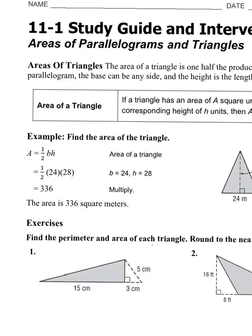Now we'll talk about areas of triangles. There are two ways to find the area: area equals one-half base times height, or area equals base times height divided by 2. I personally prefer base times height divided by 2.